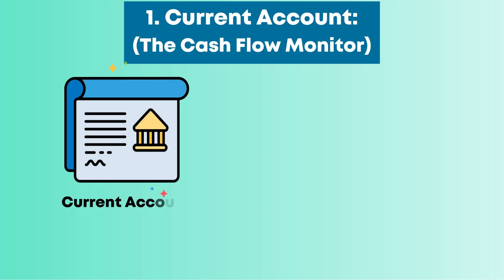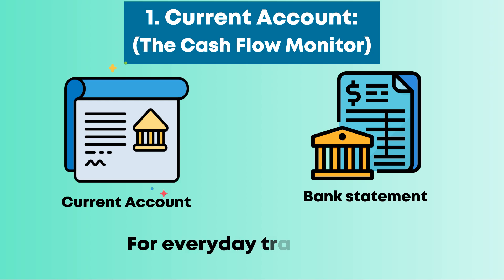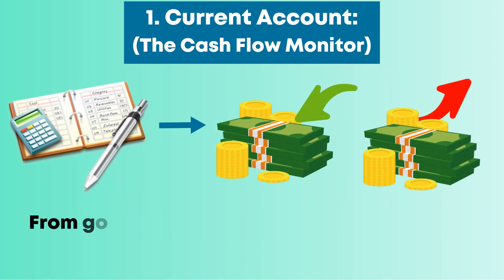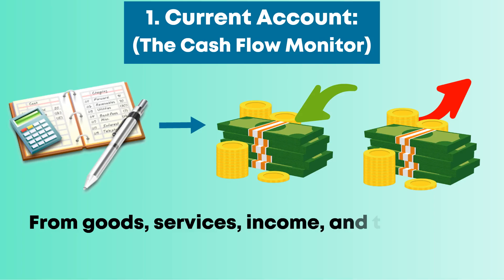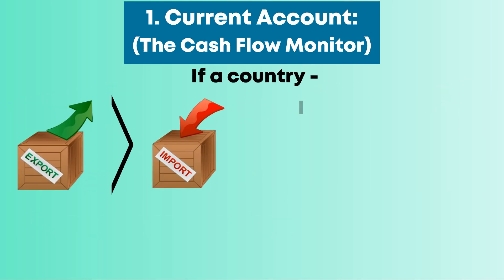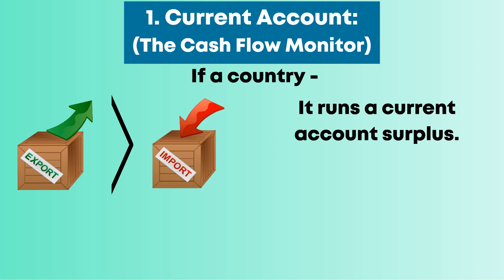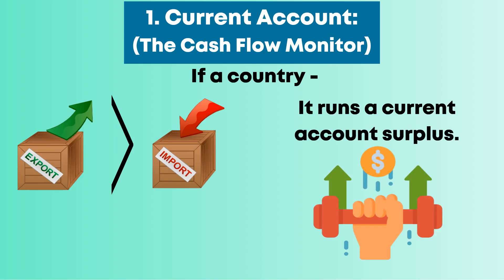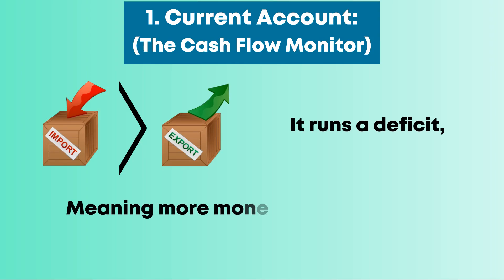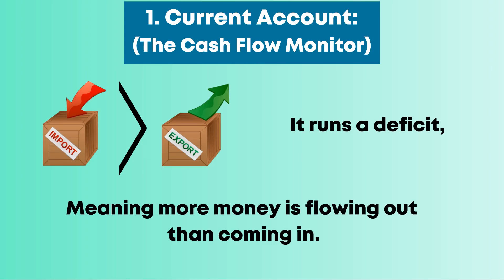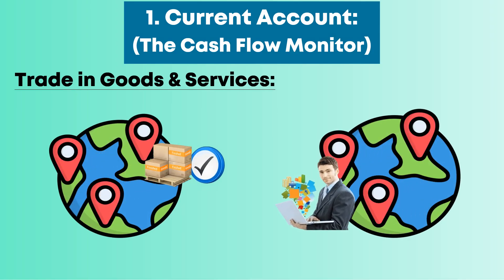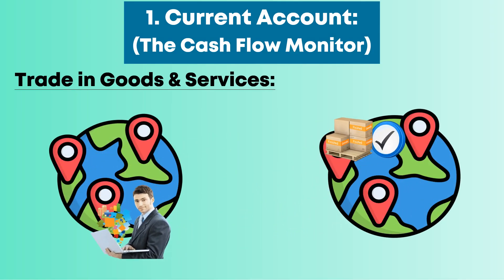Think of the current account as a bank statement for everyday transactions. It records the inflows and outflows of money from goods, services, income, and transfers. If a country exports more than it imports, it runs a current account surplus, which is a sign of economic strength. But if it imports more, it runs a deficit, meaning more money is flowing out than coming in. This includes trade in goods and services — the movement of tangible products and services between countries.